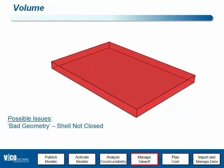Volume is a quantity that is calculated using a module inside the takeoff manager, which is capable of analyzing solids and just solids. So in order to calculate a volume, you need a closed piece of geometry. If you have an open piece of geometry — so let's say this side is missing — the volume would flow out, like water. So if that is the case, VicoOffice will not be able to calculate that volume. It is classified in that case as bad geometry.